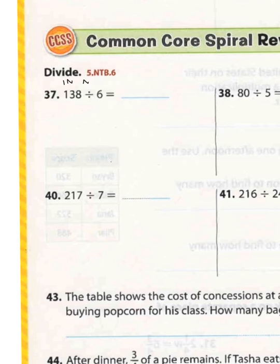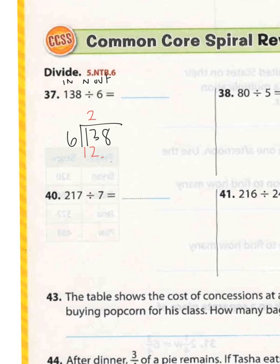So this is in and out, right? Here's my little division house. 138 goes in, 6 goes out. Now we're going to figure out how many times 6 can go into 1 — well, it can't. So I go to the next number, which is 13. Can 6 go into 13? It sure can. 6 times 2 is 12, and 13 minus 12 is 1. I'm going to bring down my 8. Now 6 times what equals 18? 3. So my answer for this one is 23.